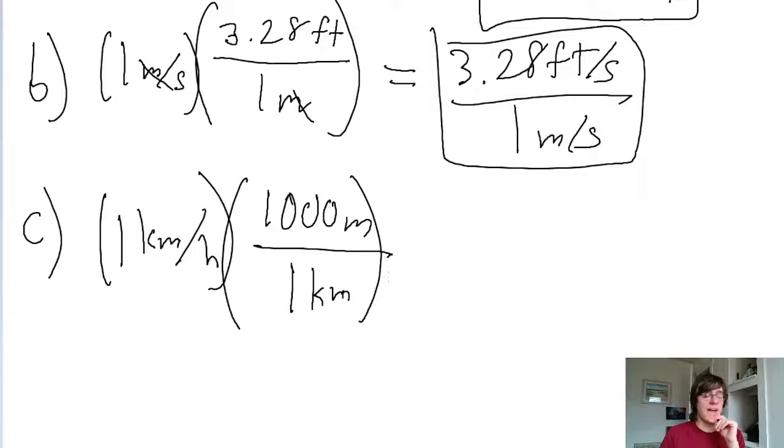Now for the time - we have hours in the denominator and we want to cancel that out. Since we're replacing hours with another unit of time, the thing we're canceling out actually goes in the numerator, because whatever goes in the numerator will cancel out whatever's in the denominator. And one hour, as you can look up or calculate, equals 3,600 seconds.